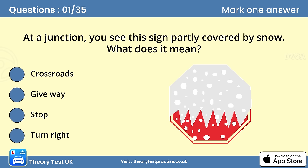Question 1. At a junction, you see this sign partly covered by snow. What does it mean? The answer is C: Stop. The stop sign is the only sign in the shape of a hexagon. This helps you to recognize it even when the wording can't be seen.